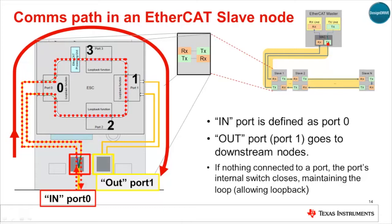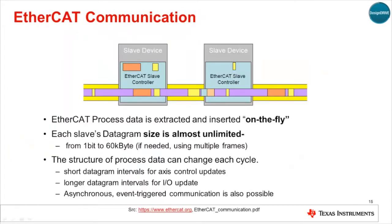In a two-port system, port 1 is considered the output port, which is connected to slave nodes downstream in the chain. EtherCAT slave devices read the process data addressed to them and insert return data on the fly as the datagram passes through. The size of a datagram is very flexible and can contain data for the entire network of slave nodes. The amount of data targeted at each node can vary widely, from a single bit up to 60 kilobytes. Additionally, the structure of process data can change for each datagram, enabling short data intervals for access control updates and longer intervals for block data updates. Asynchronous event-triggered communication is also possible.